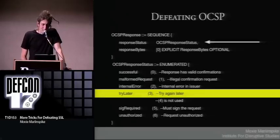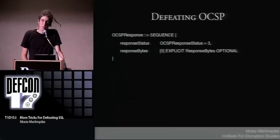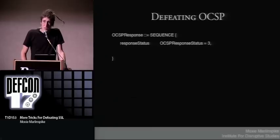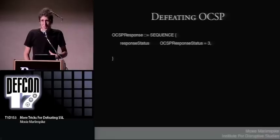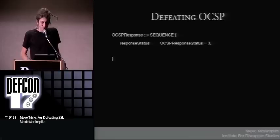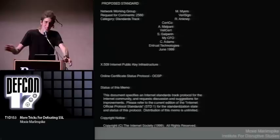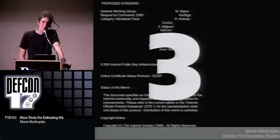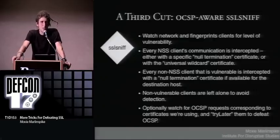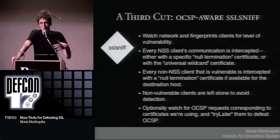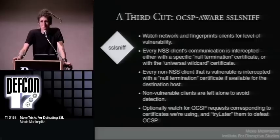The interesting thing about "try later" is that you don't have to include the optional response bytes when you send it. All you have to send back is the response itself, which is a single byte value — literally the ASCII character three, 0x33. And it turns out that when you send that back, every SSL implementation I've tried agrees that it also doesn't sound too bad. What this essentially means is that this entire OCSP standard can be defeated by the number three.